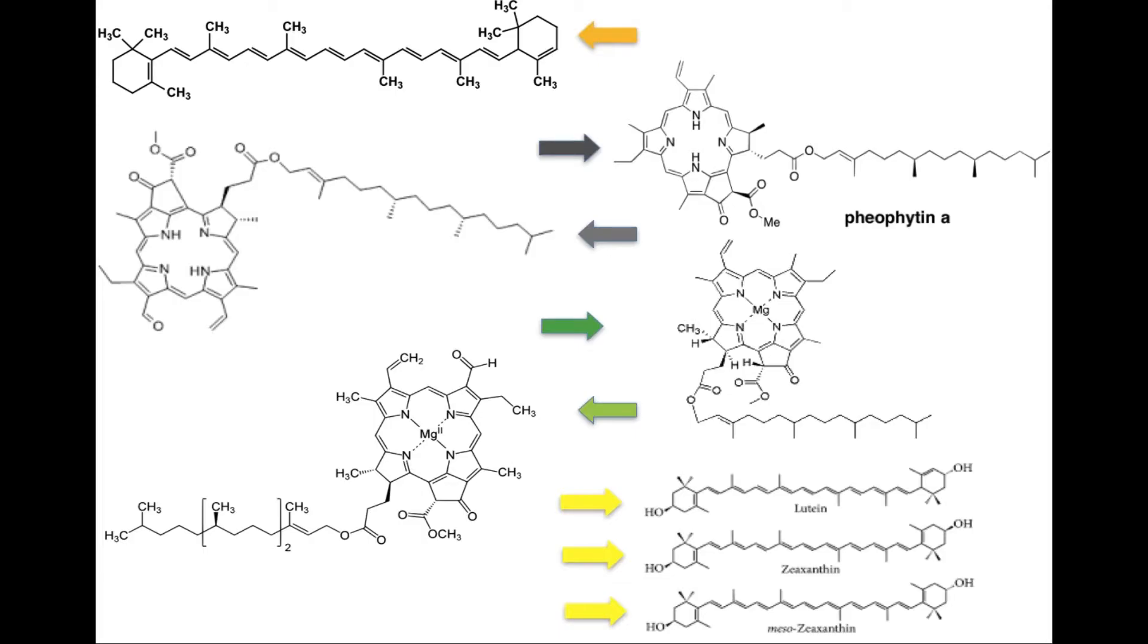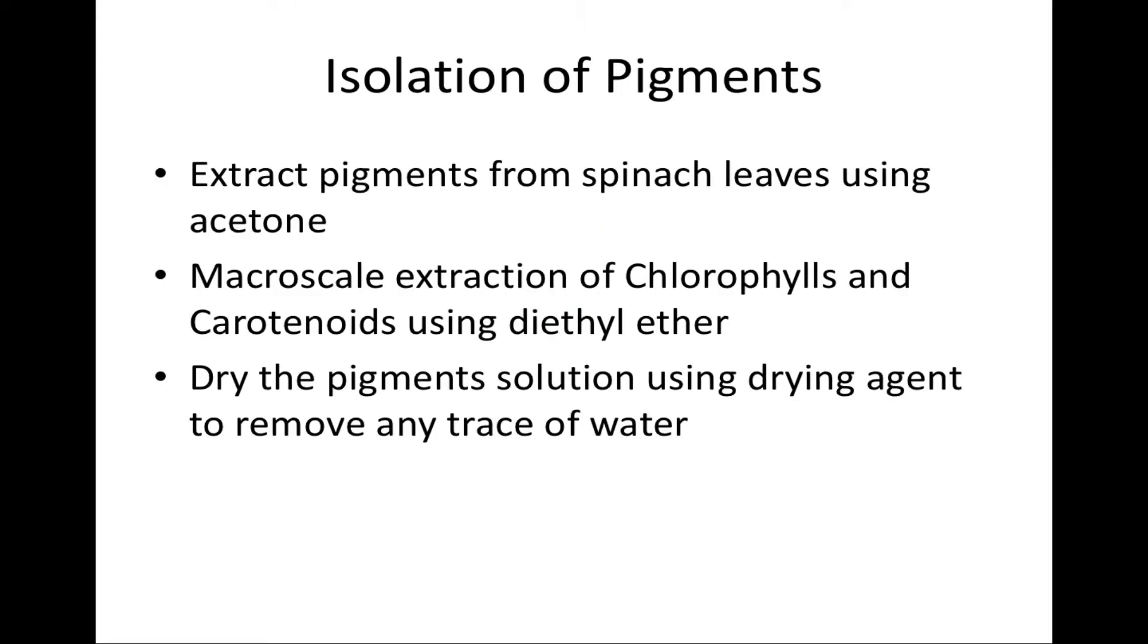In the order of increasing polarity, from the top: carotenes, the least polar among the pigments. Next is pheophytin A and B, which are gray.